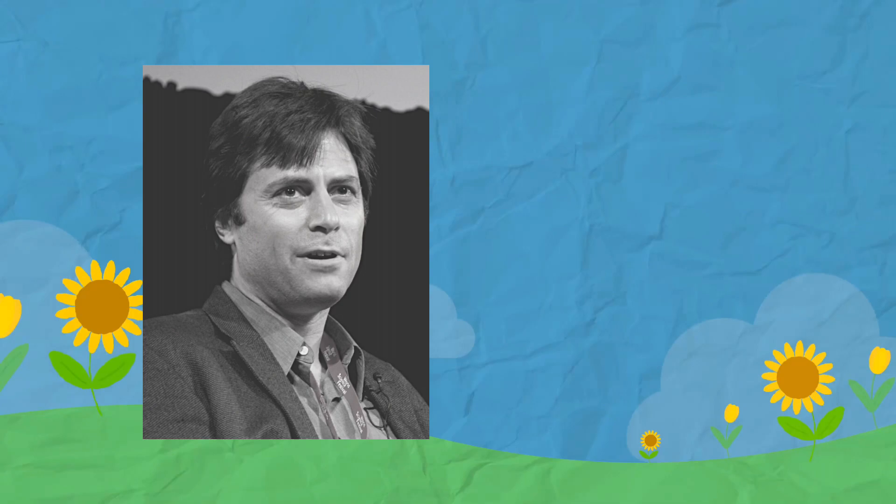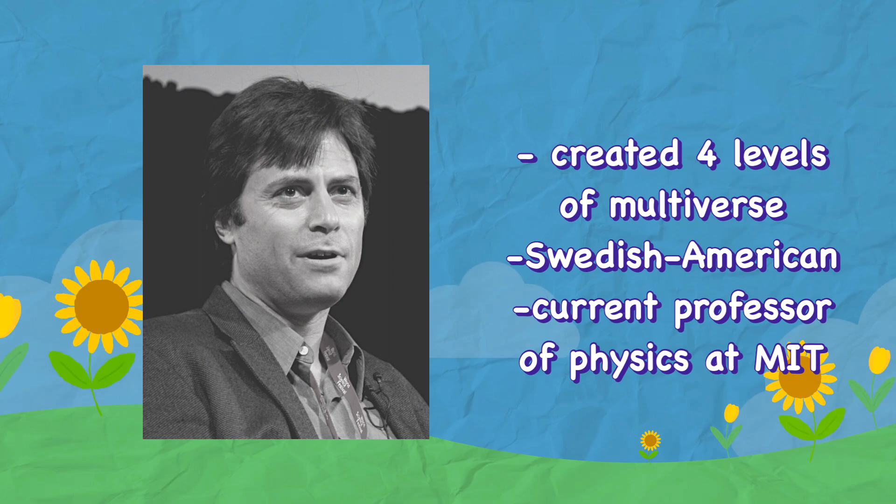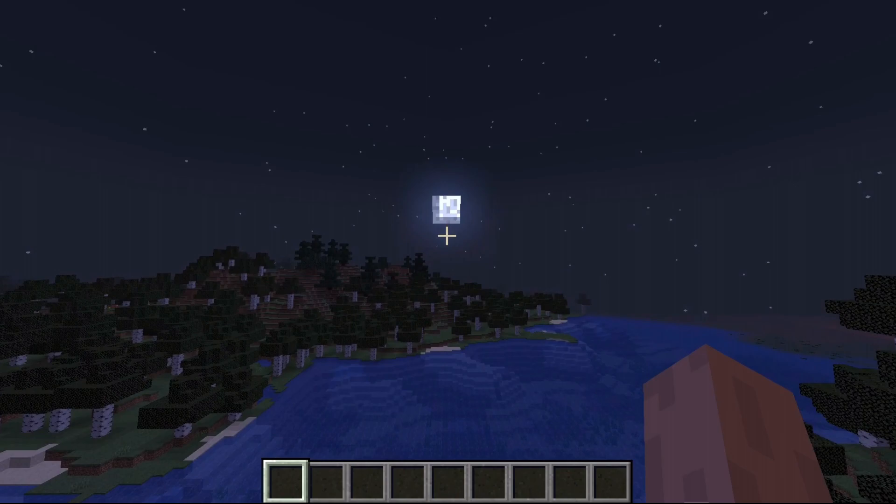There are so many different theories of what multiverses look like and how they form. Max Tegmark is a Swedish-American physicist and he organized these theories into four levels.